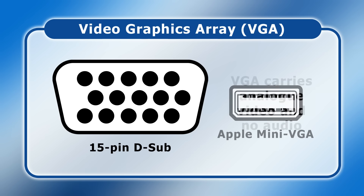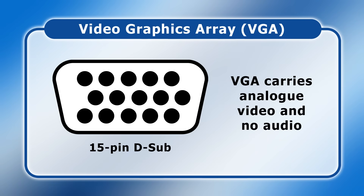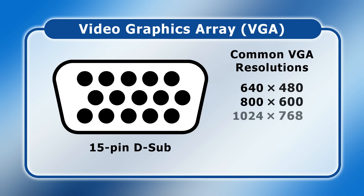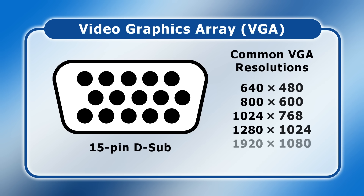VGA carries analog video signals and no audio, and was initially designed to support a resolution of 640x480. However, it's now used to deliver higher resolutions that include 800x600, 1024x768, 1280x1024, 1920x1080, and 2048x1536. Because VGA is analog and not digital, some people find VGA images with a resolution of 1920x1080 or higher to be fuzzy.